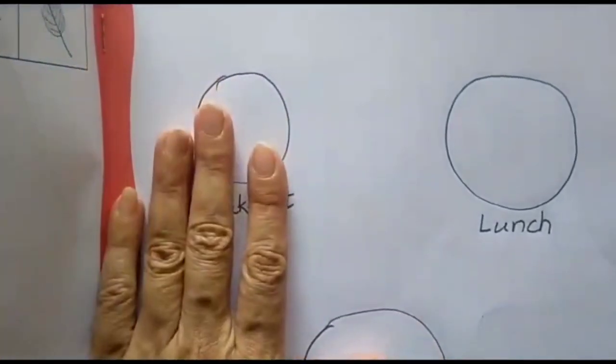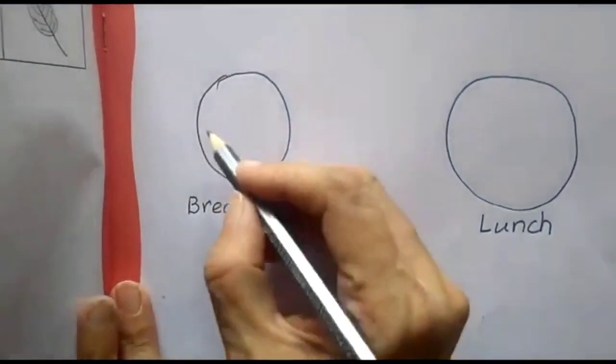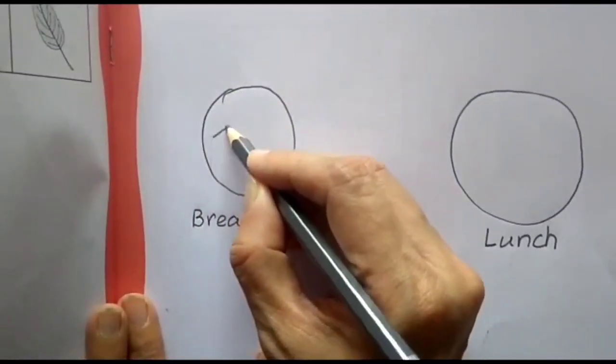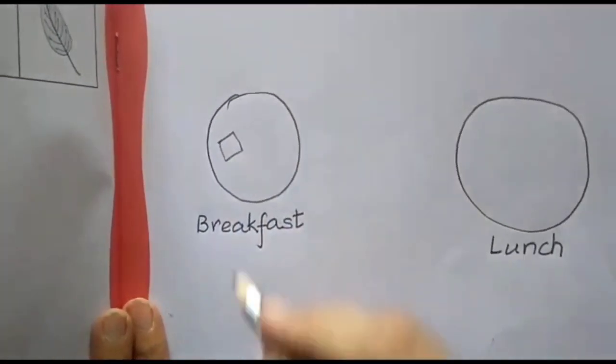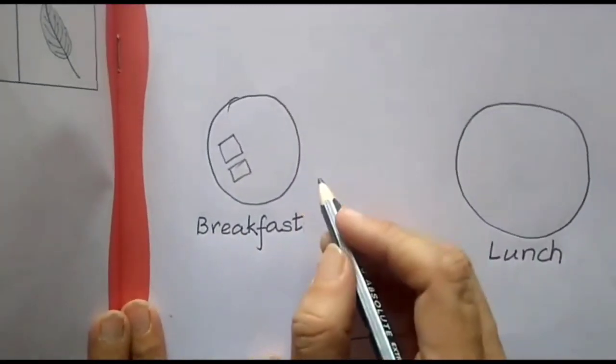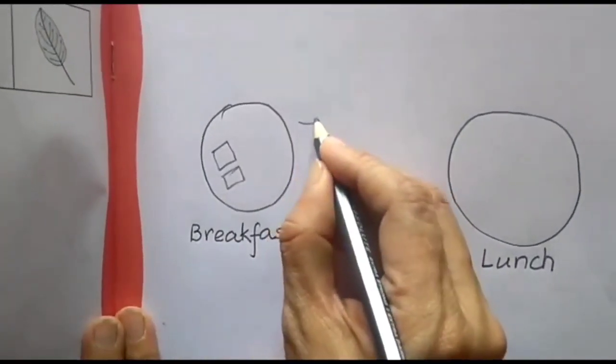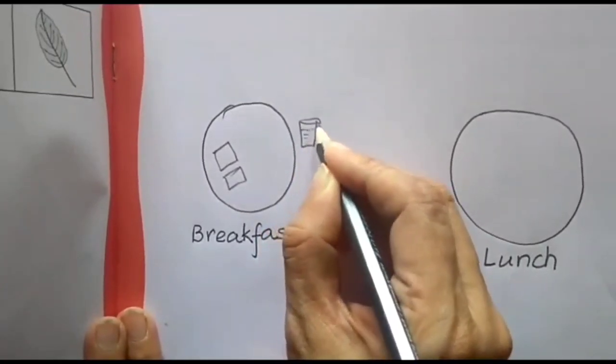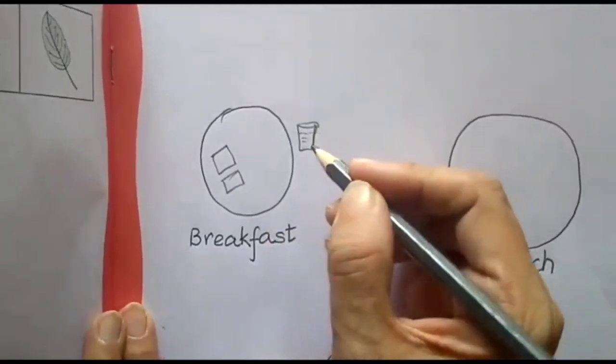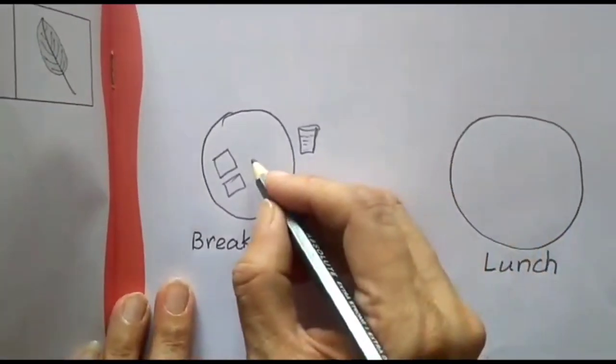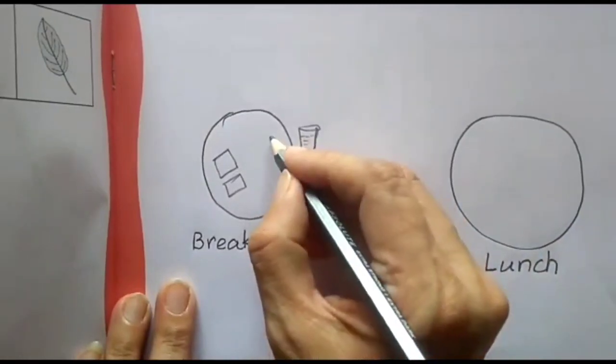Now, suppose if you have bread, you can draw. Suppose today morning, I had bread. So, I will draw bread here, two pieces of bread. I had a glass of milk so here I'm going to draw a glass full of milk. Milk is good for our health especially for our bones. It's full of calcium and here I had one egg also so I will draw egg.